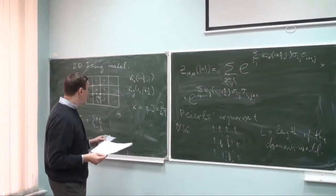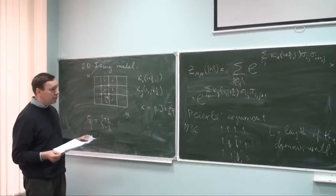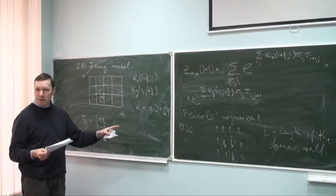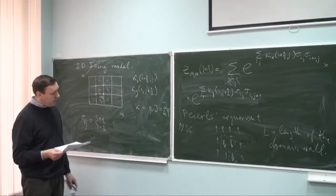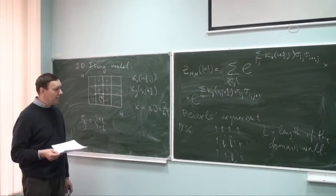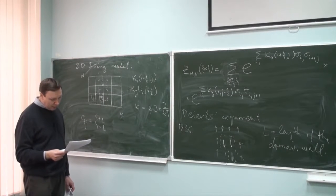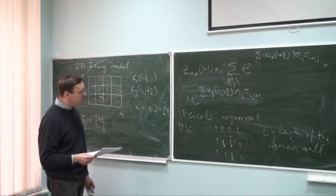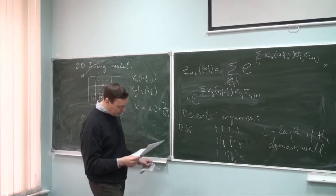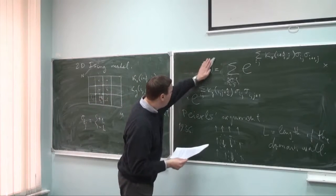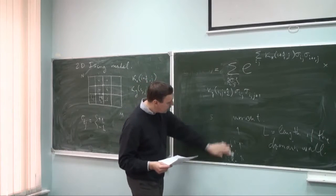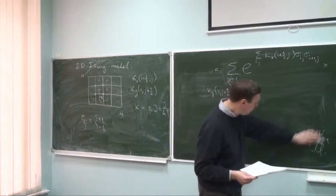This was really the first paper after Ising's original paper on this model. The exact value of the critical temperature will be found shortly using duality.